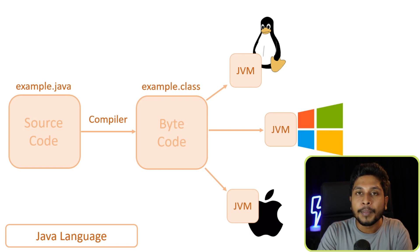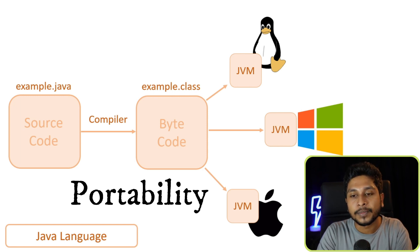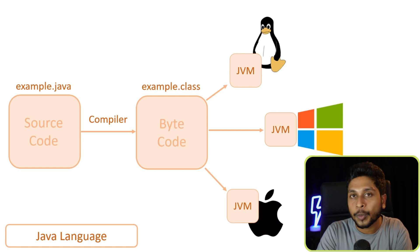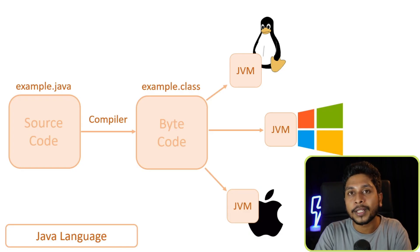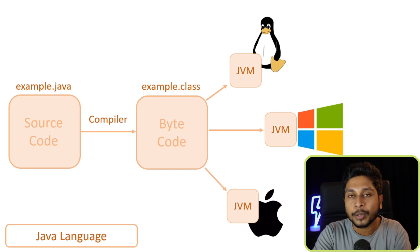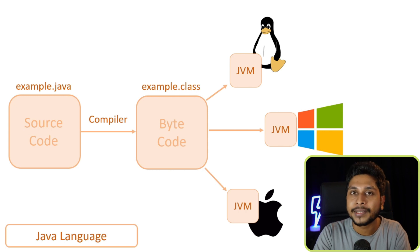So we can use Java to install portability. If you want to run a machine, you can compile to bytecode. This is the case where Java is a distributed application. Why is it a distributed application? Why do you need to run a network?